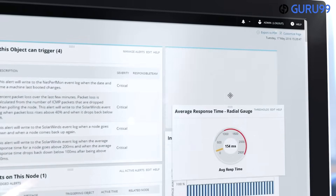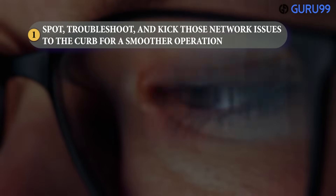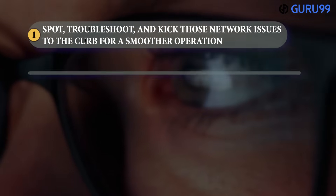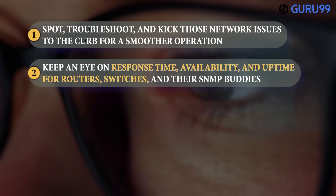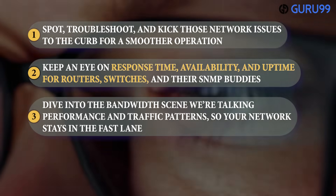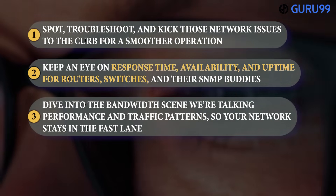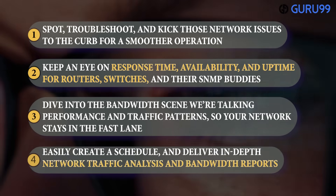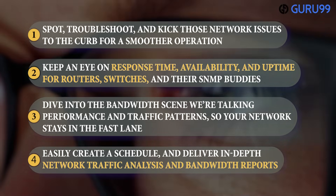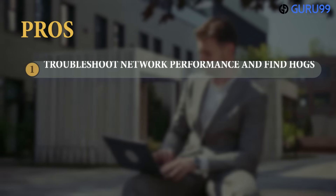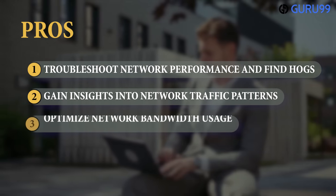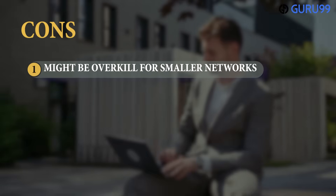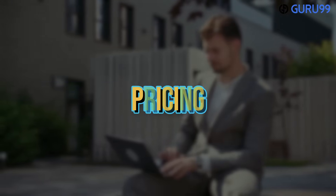Think of it as your tech sidekick — equipped to detect, diagnose, and resolve performance hiccups like a pro. Keep an eye on response time, availability, and uptime for routers, switches, and their SNMP-enabled devices. Dive into bandwidth performance and traffic patterns so your network stays in the fast lane. Easily create schedules and deliver in-depth network traffic analysis and bandwidth reports. Supported platforms: Windows and Linux. Pros: troubleshoot network performance and find bandwidth hogs; gain insights into traffic patterns; optimize network bandwidth usage. Cons: might be overkill for smaller networks. Price: contact customer support.